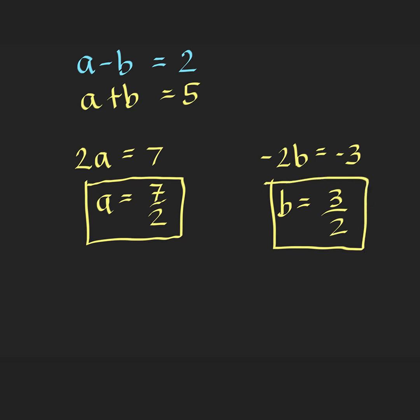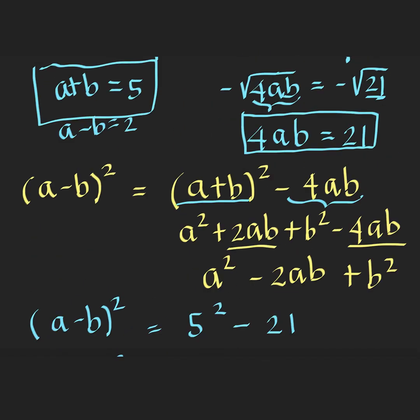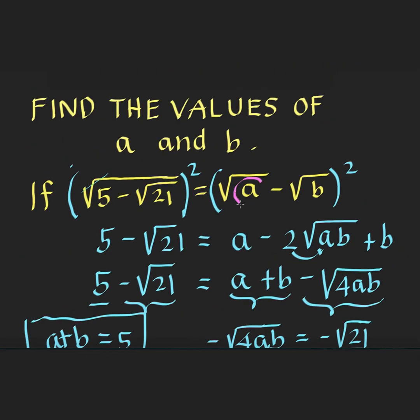So we now have the values of A and B to be 7 halves and 3 halves, respectively. So going back now to our question, we want to find the value of this A and this B, and we already computed that A is equal to 7 halves, and B is equal to 3 halves. We already found the values of A and B, and so we are done.